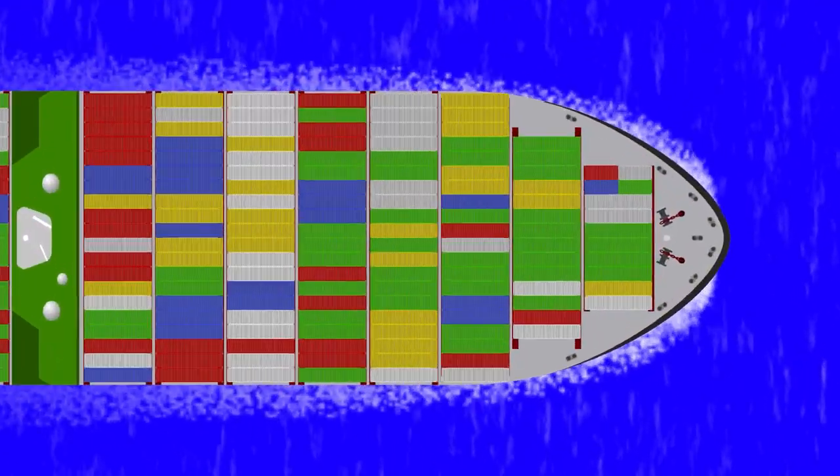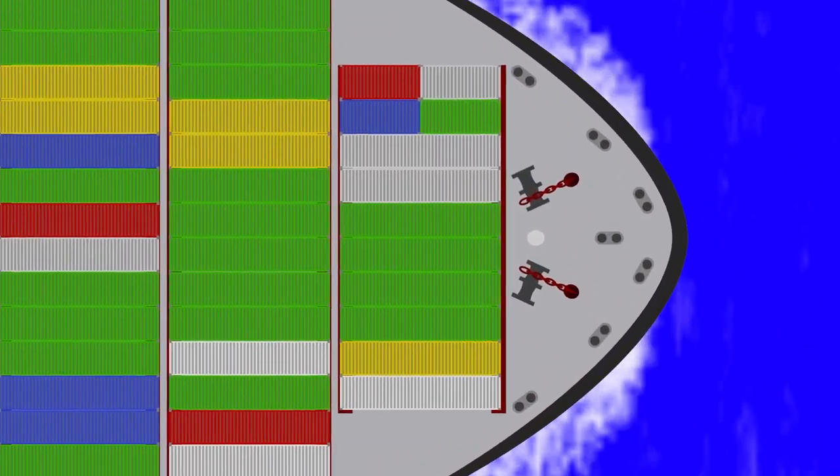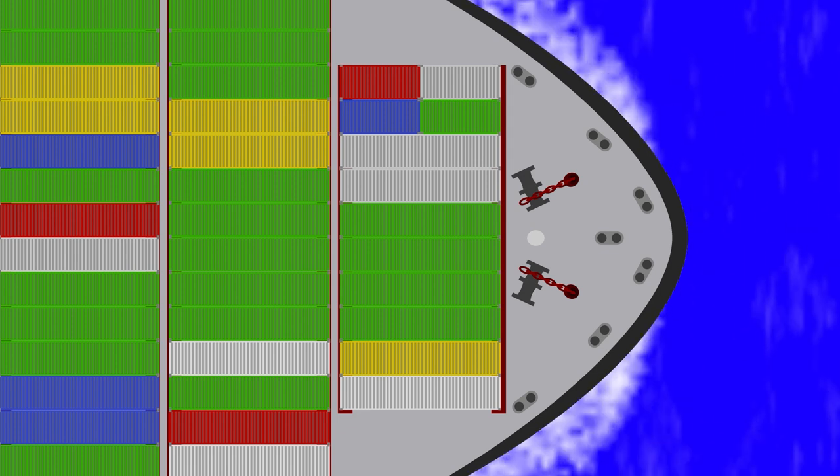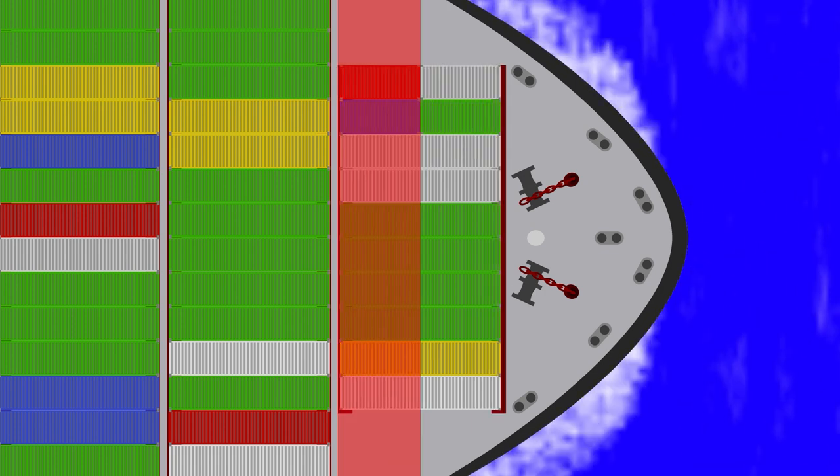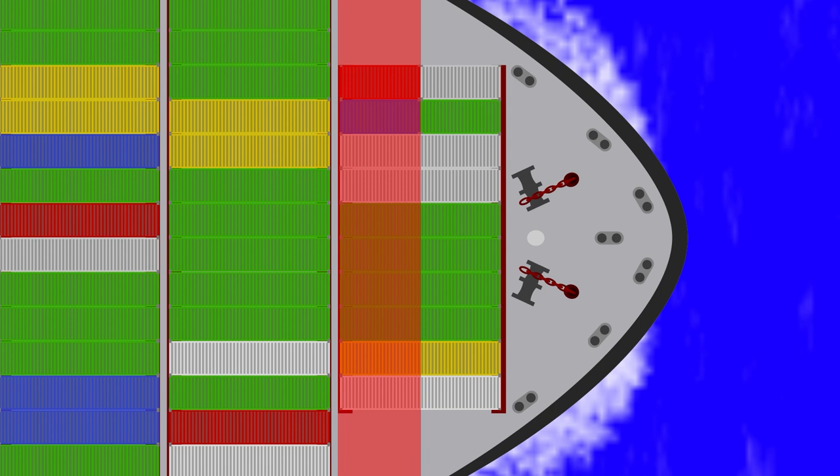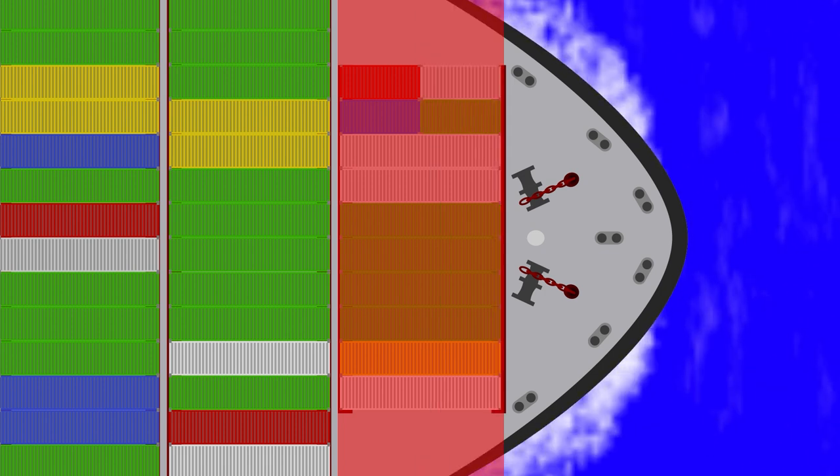Each of those bays could be further broken down depending on the length of the container in the bay, with odd numbers showing 20-foot containers and even numbers showing 40-foot containers. For example, in this first bay, 01 would indicate a 20-foot container at the bow and 02 would be either a 20-foot container in the back half of the bay or a 40-foot container spanning the bay.